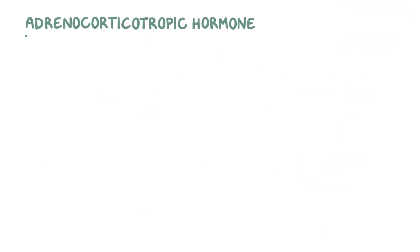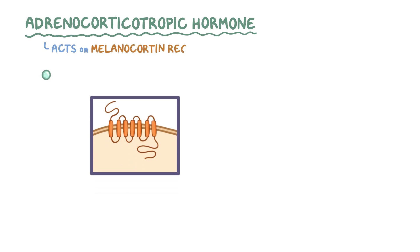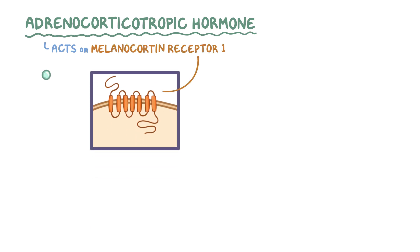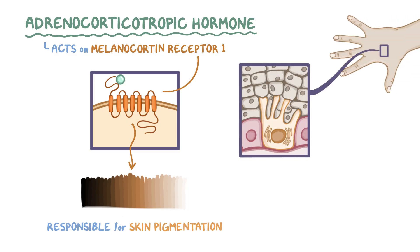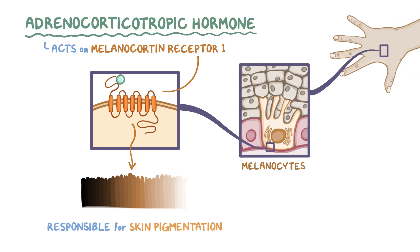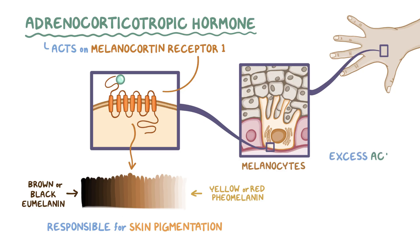As a secondary function, adrenocorticotropic hormone also acts on the melanocortin receptor 1, which is a 7-pass transmembrane receptor responsible for pigmentation of the skin. More specifically, its activation causes melanocytes in the skin to switch from generating yellow or red pheomelanin to brown or black eumelanin. For this reason, individuals affected by diseases characterized by excess ACTH show bronzing of the skin.